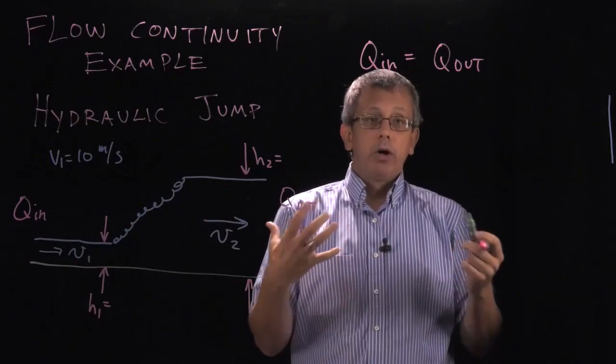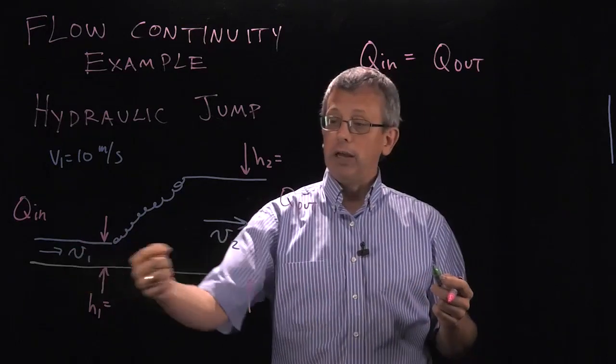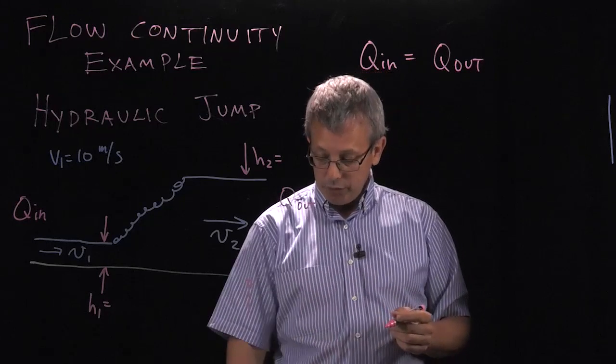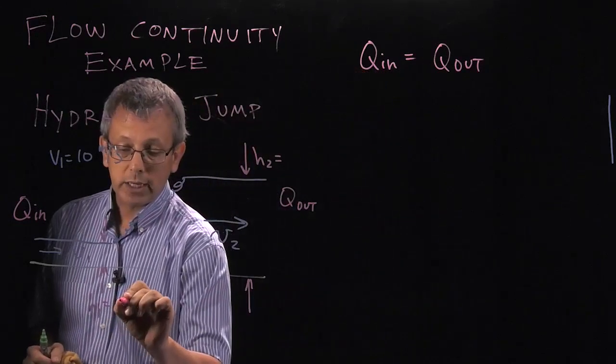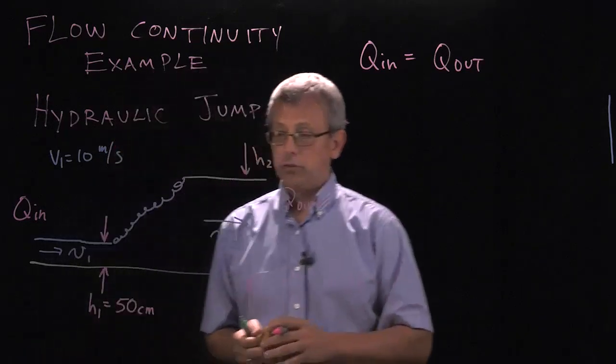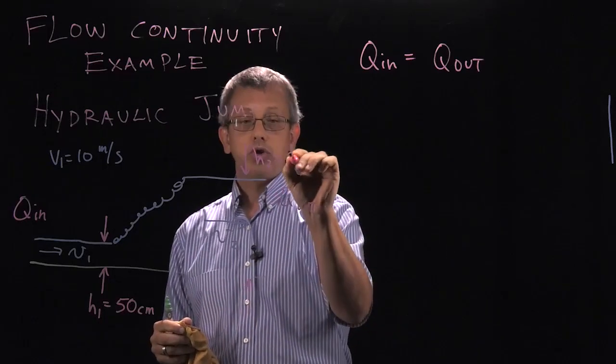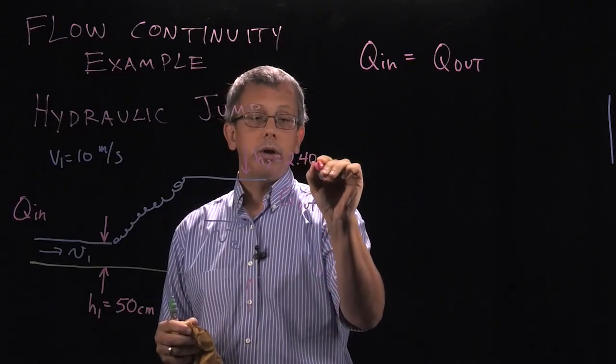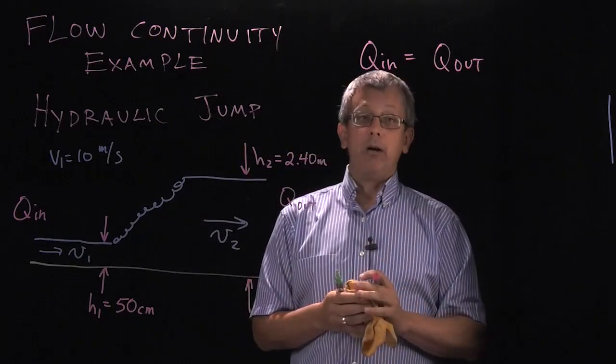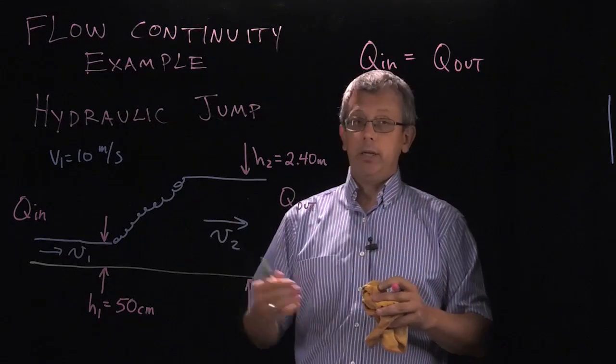And we know from our earlier discussion that we can relate the flow to these speeds, the velocities in and the velocities out. Now I have actual values for the heights of real hydraulic jumps. Here is an example under one set of conditions, where the height here is 50 centimeters, and the height after the jump is equal to 2.40 meters. So we have a difference of about just under five times the depth of water after the jump as we did before the jump.